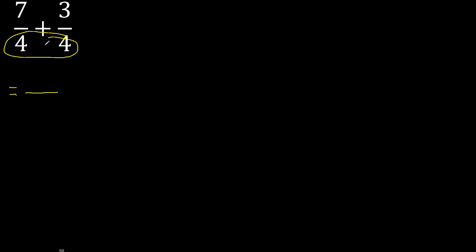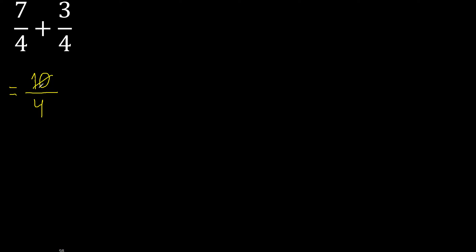Equal number, therefore the same number here. 4 and 7 plus 3 is 10. It can be simplified because it can be divided by the same number. Divided by 2, then divided by 2 is 5. 4 divided by 2 is 2.